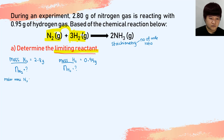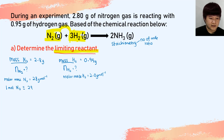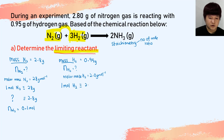The molar mass of N₂ is 28 g/mol and the molar mass of H₂ is 2 g/mol. With 2.8 g of N₂, the number of moles of N₂ is 0.1 mol. With 0.95 g of H₂, the number of moles of H₂ is 0.475 mol. These are the moles given in the question.